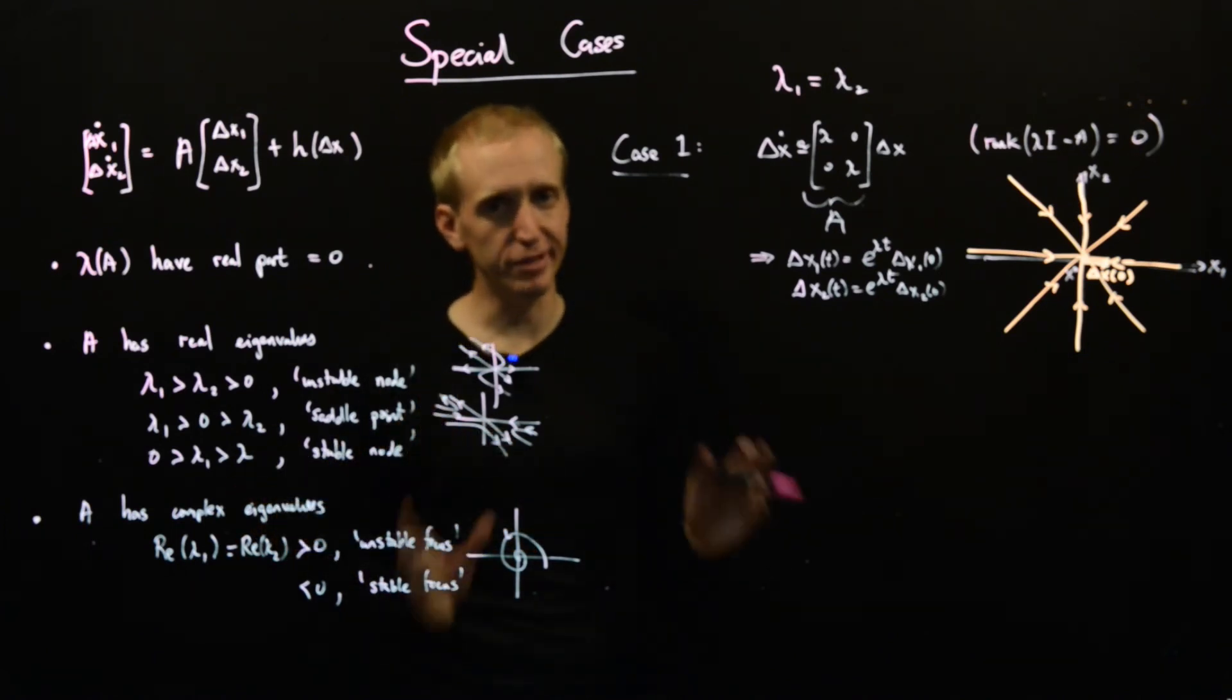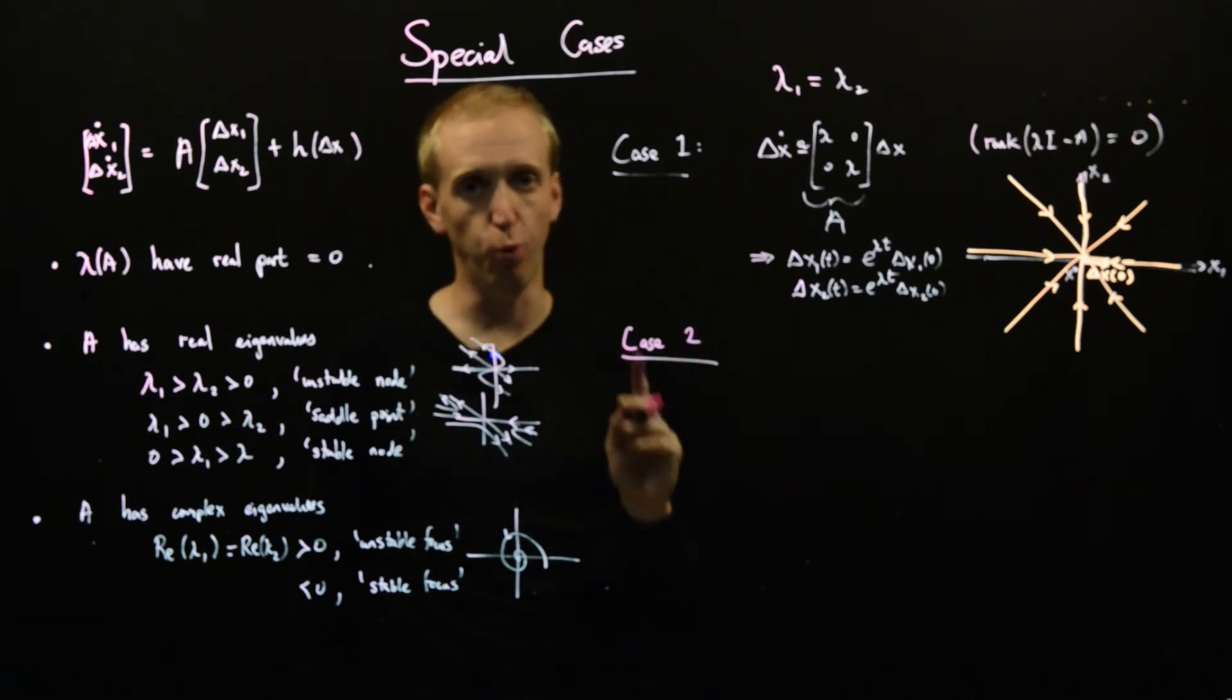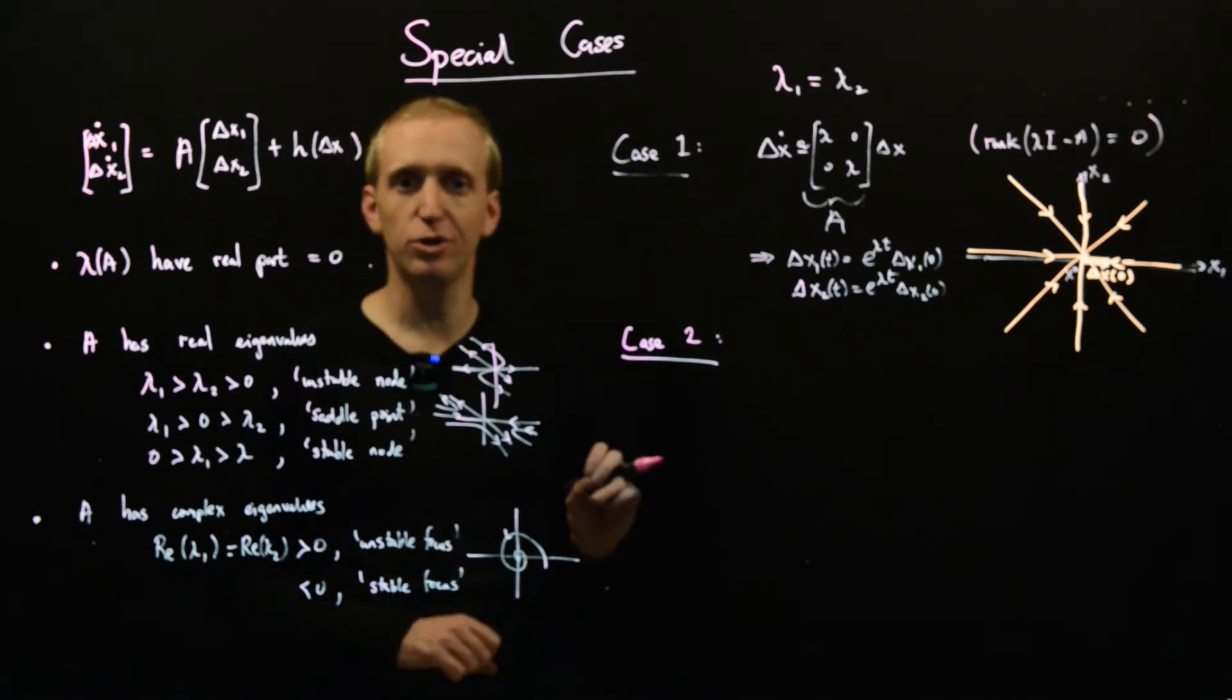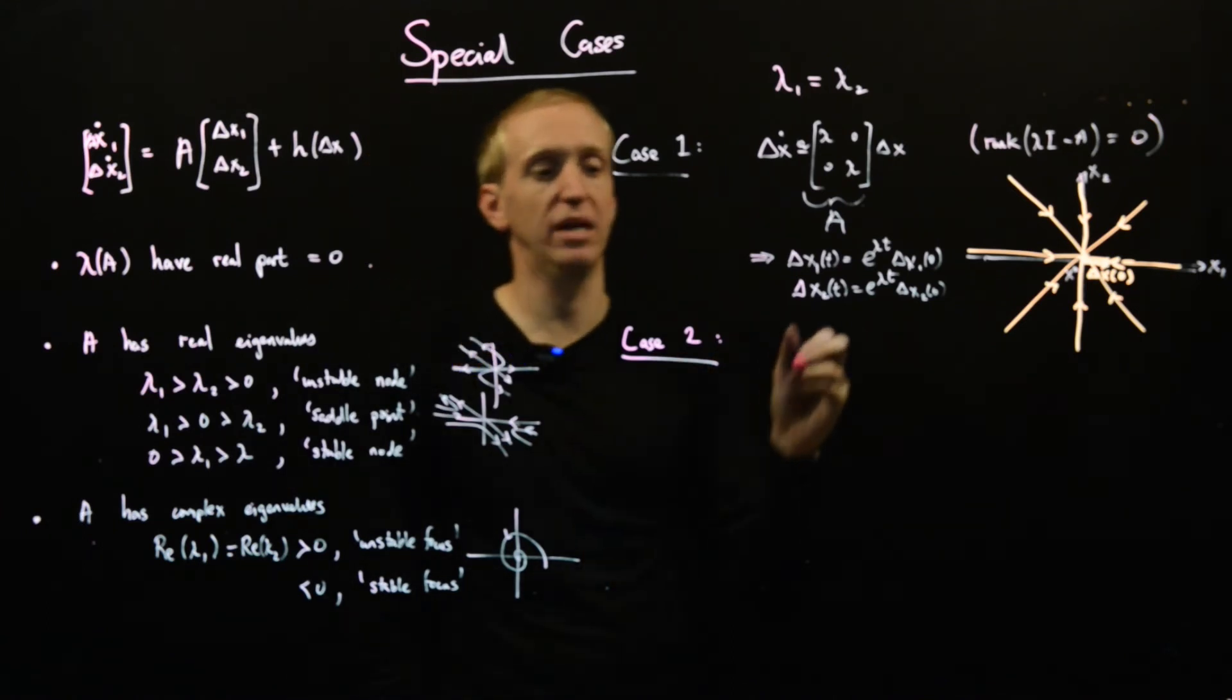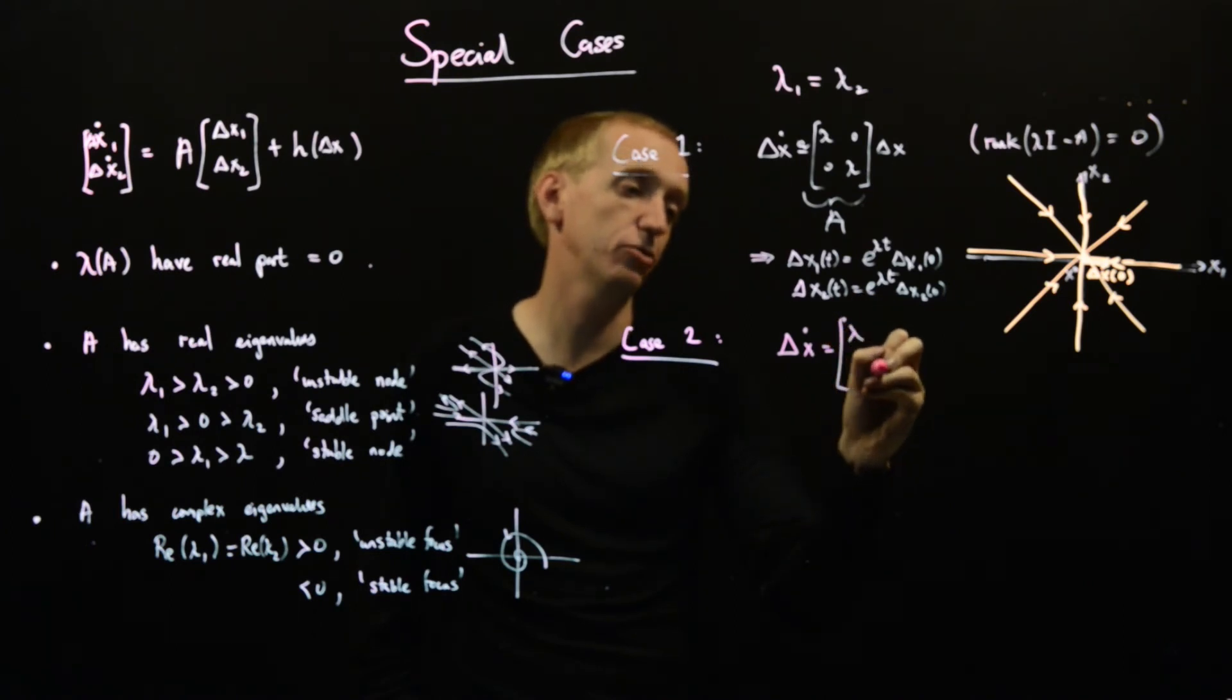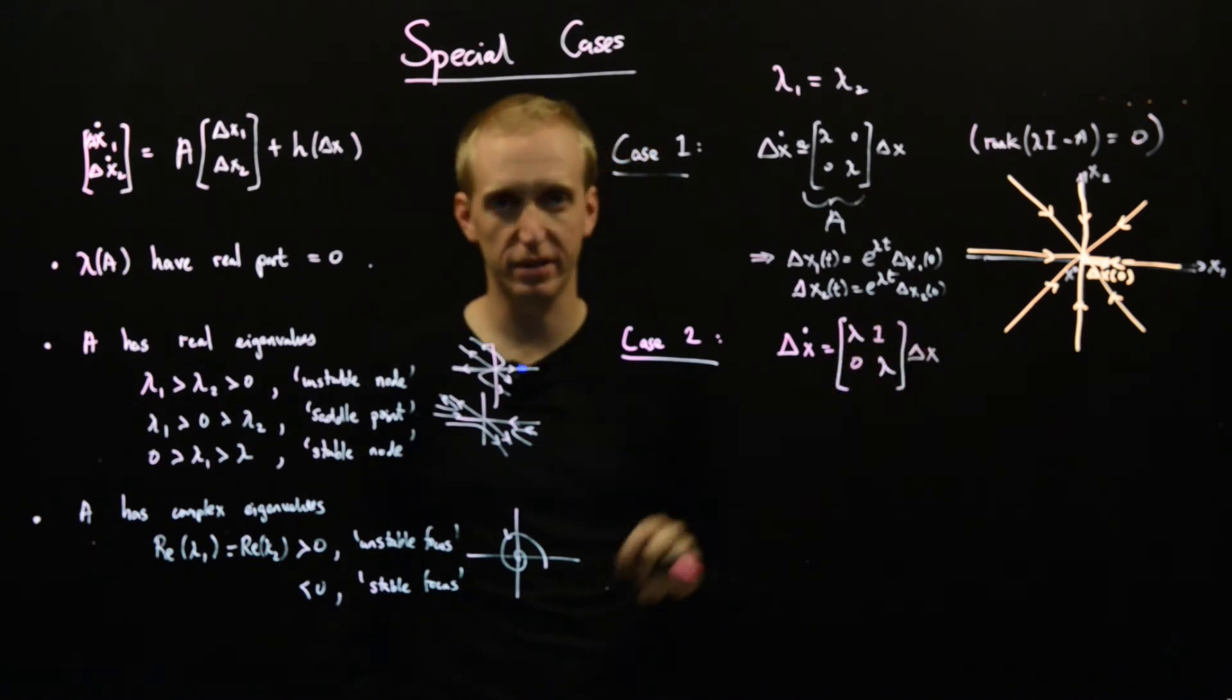But then there is an annoying second case. And this case corresponds to the fact when your A matrix only has one eigenvector. And I don't know if this is something that you've come across before, but it can happen. It's kind of pathological, just a tiny perturbation to your matrix will push it into a case where it will have a full set of eigenvectors again. But technically it can happen. So we need to cover it. And the prototypical example of this is the following matrix. So we have lambdas on the diagonal again. This is our eigenvalue. We have a zero here and we have a one here. And if you're interested in reading more, this is what's called the Jordan block.